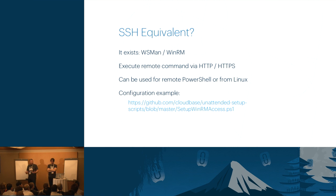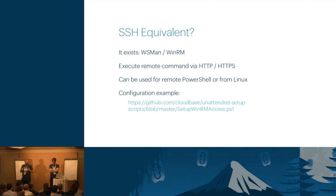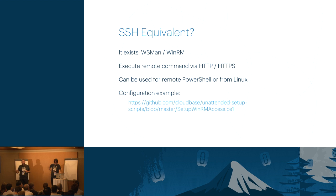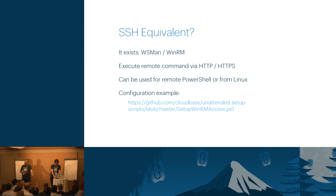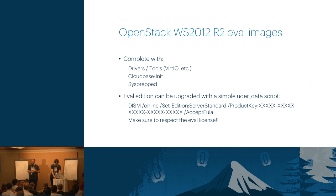As an SSH equivalent, in Windows today we use WinRM and WSMAN to remotely manage a box. It allows us to control the machine over HTTP and HTTPS, execute PowerShell, and we can actually run commands directly from Linux — installing those tools on Linux and using it as a starting point for automation of Windows hosts. Configuration examples and scripts are available on the CloudBase GitHub repository.